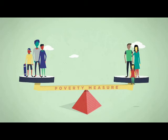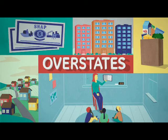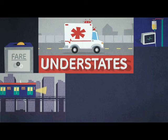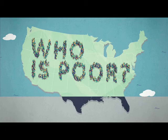It overstates poverty by not counting benefits like food stamps, subsidized housing, and childcare. It understates poverty by ignoring expenses like transportation, healthcare, and rent that take a huge bite out of a family's income. Without an accurate way to count people and families in need, we don't know who's poor in the United States, and this impacts policy, programs, and people.